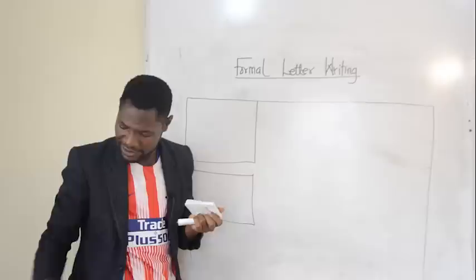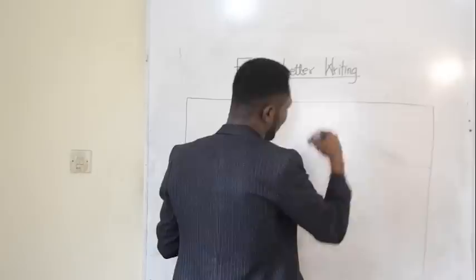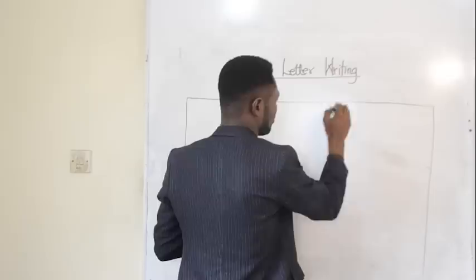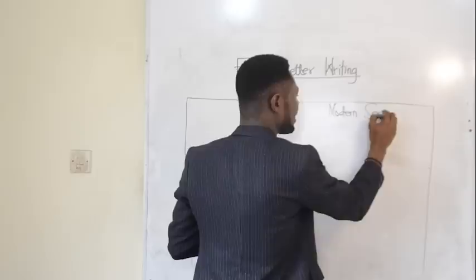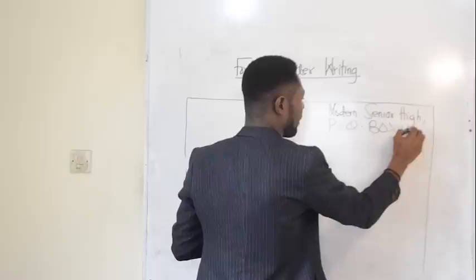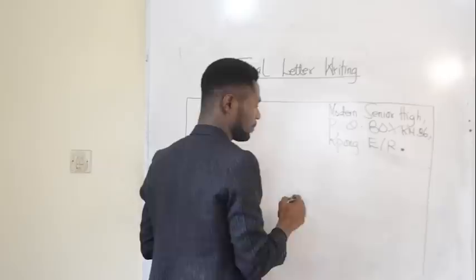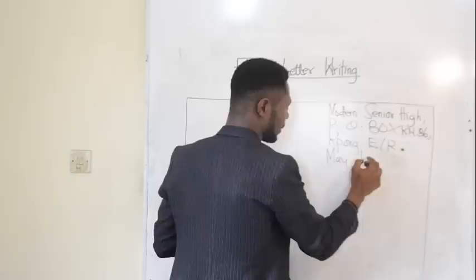Let's delve into the addresses. Starting with a personal address, for example: Modern Senior High School, P.O. Box, K.N. 36, Eastern Region. Full stop. Then the date: May 1, 2019. Full stop.